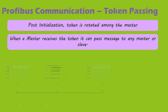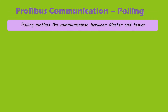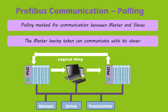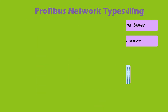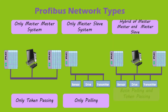Post-initialization, the token is rotated among the masters. When a master station receives the token from the previous master, it gets the right to pass messages to slaves as well as other masters. The polling method is used for communication between a master and its slaves — specifically by the master that currently holds the token. A Profibus network could be a pure token passing system (master-master), a pure polling system (master-slave), or a hybrid of both token passing and polling in the same network.